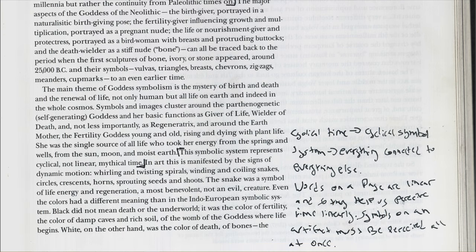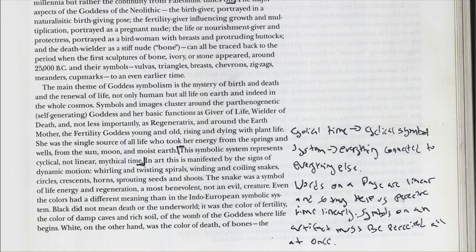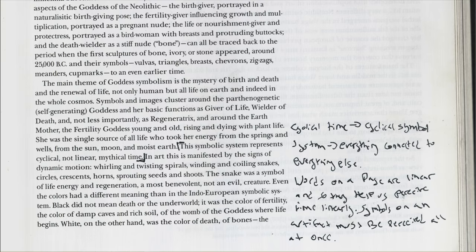The main theme of goddess symbolism is the mystery of birth and death and the renewal of life — not only human but all life on Earth and indeed the whole cosmos. Symbols and images cluster around the parthenogenic, self-generating goddess and her basic functions as giver of life, wielder of death, and not less importantly as regeneratrix, and around the Earth Mother, the fertility goddess, young and old, rising and dying with plant life. She was the single source of all life, who took her energy from the springs and wells, from sun, moon, and moist Earth. This symbolic system represents cyclical, not linear time.